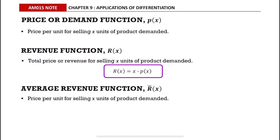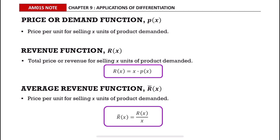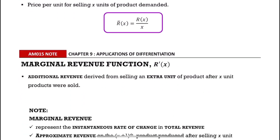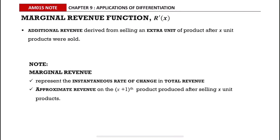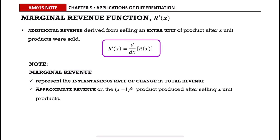The average revenue function equals the revenue function divided by x. The marginal revenue function is denoted as R'(x). It is the additional revenue derived from selling an extra unit of product after x units were sold. The marginal revenue function equals the differentiation of the revenue function.